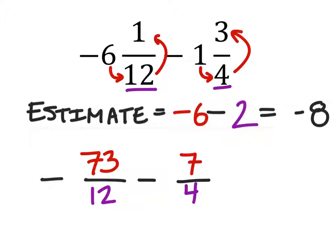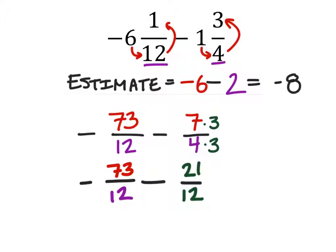So I have these two improper fractions but I can't subtract them until I have common denominators. I can find the least common denominator or just any common denominator will work but I see that 4 goes into 12 three times so I'll multiply it by 3 but I have to multiply the numerator by 3 as well so that I maintain equality of the fraction. So now I have negative 73 over 12 minus 21 over 12.